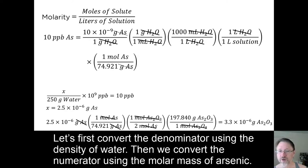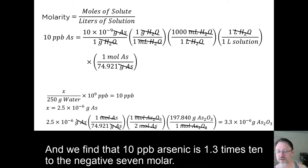Then we convert the numerator using the molar mass of arsenic. And we find that 10 ppb arsenic is 1.3 times 10 to the negative 7th molar.